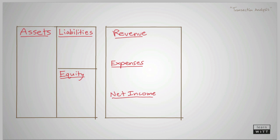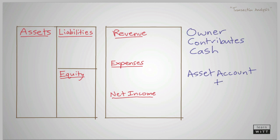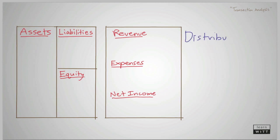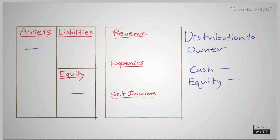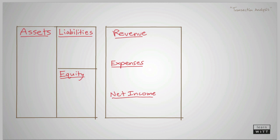When a transaction takes place, the changes are reflected on the books within certain accounts. Here are some common transactions and their corresponding effects on accounts. When an owner makes a contribution of cash into the business, an asset account will increase and an equity account will increase. When a business distributes assets from the business to the owner, an asset account will decrease and an equity account will also decrease.